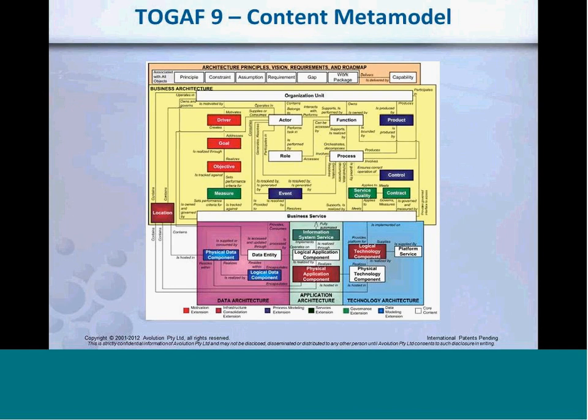This is the content metamodel picture as it was in TOGAF 9, winding the clock back about three years. The white part is the core of the content metamodel, then the various coloured boxes are extensions — motivation extensions, data modelling extensions, and things like that. It's an ontological model, a metamodel — saying things like an organisation unit contains actors. There are many of these out there.